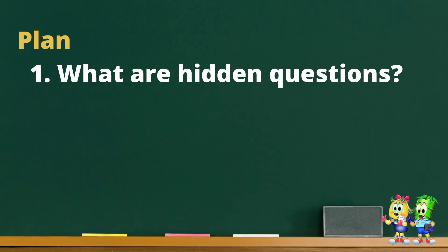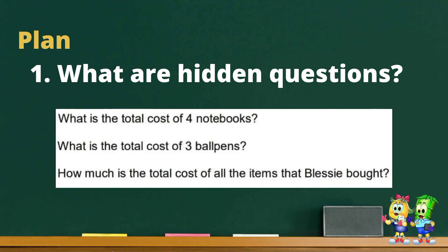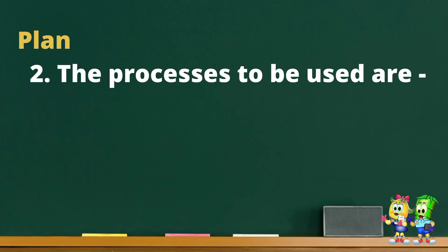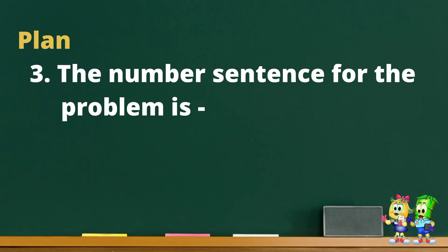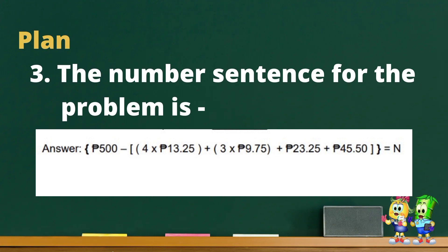What are the hidden questions? What is the total cost of four notebooks? What is the total cost of three ballpens? How much is the total cost of all the items that Blessie bought? The processes to be used are multiplication, addition, and subtraction. The number sentence for the problem is: five hundred minus the quantity of four times thirteen pesos and twenty-five centavos, plus the quantity of three times nine pesos and seventy-five centavos, plus twenty-three pesos and twenty-five centavos, plus forty-five pesos and fifty centavos, equals N.